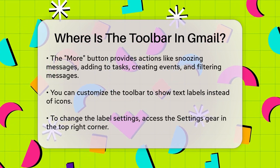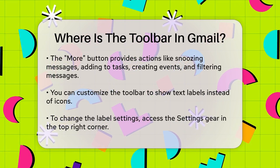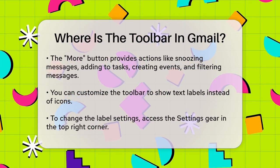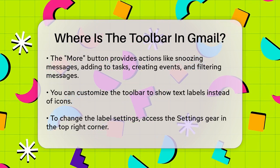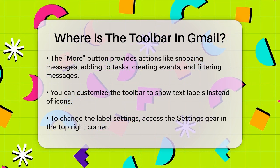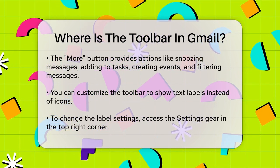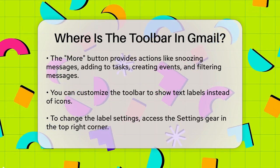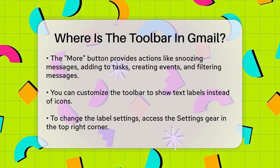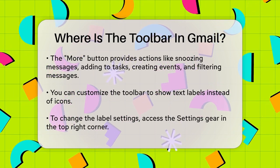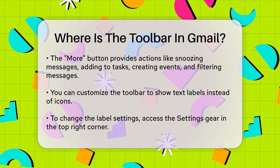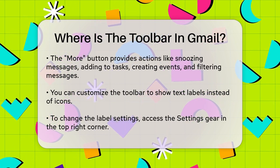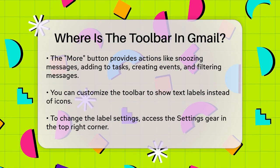You can also customize the look of your toolbar. If you prefer text labels instead of icons, you can change this setting. To do this, go to the top right corner of Gmail, click on the settings gear, select See All Settings, scroll down to the Button Labels section, and choose Text. Then save your changes.